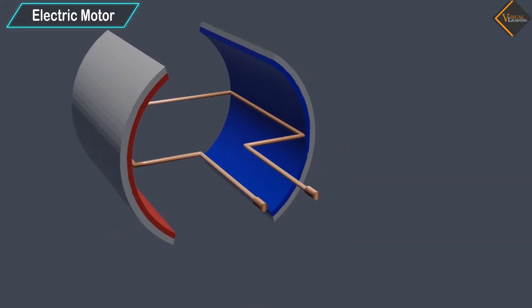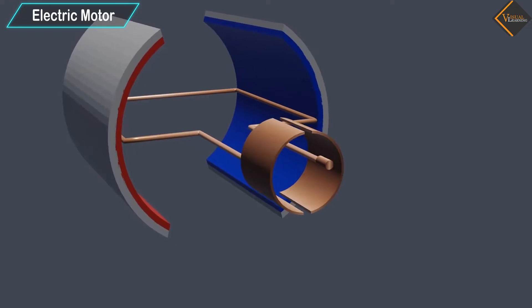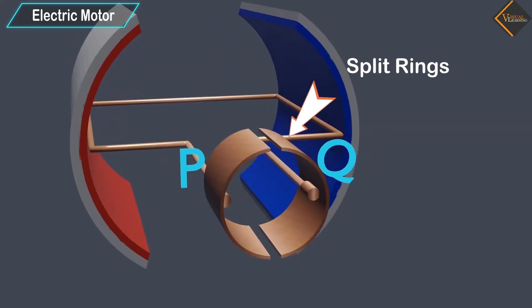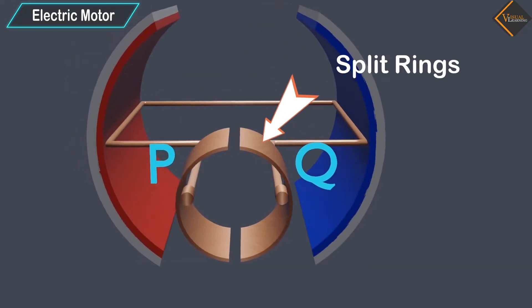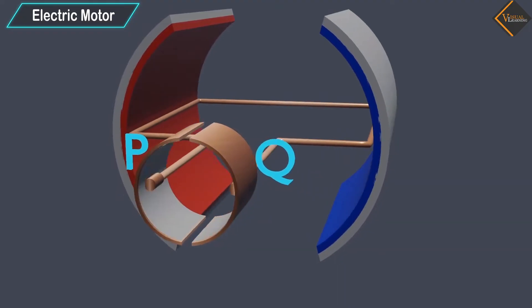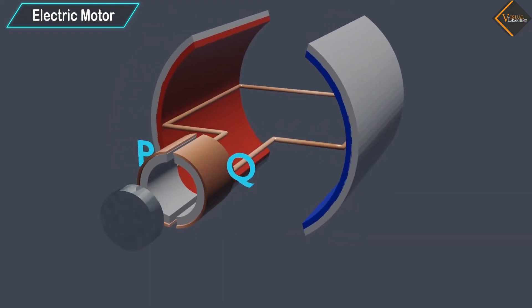The ends of the coil are connected to the two halves, P and Q, of a split ring. The inner sides of these halves are insulated and attached to an axle.